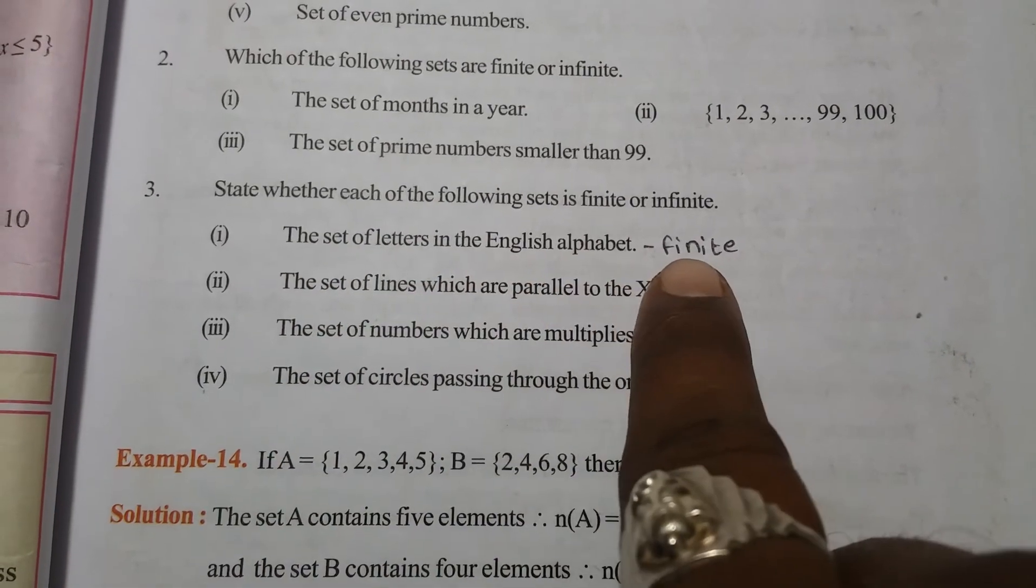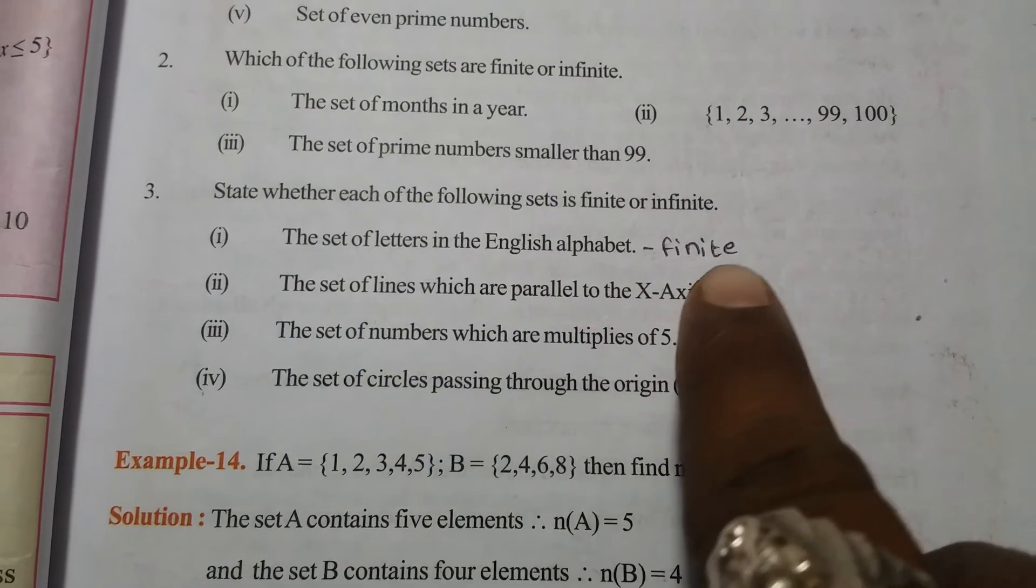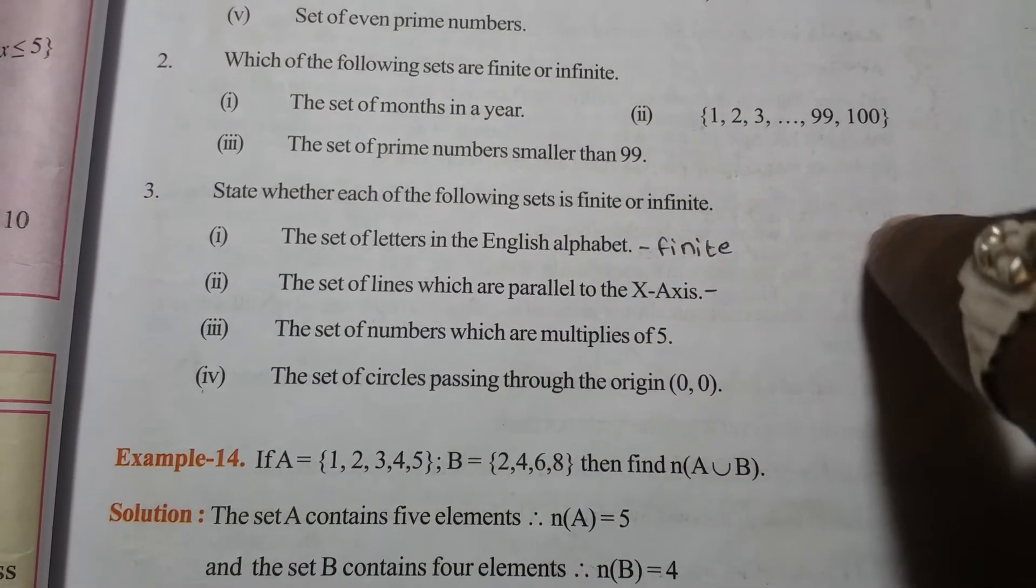Set of letters in the English alphabet. This is a finite set. It contains 26 alphabets in it.